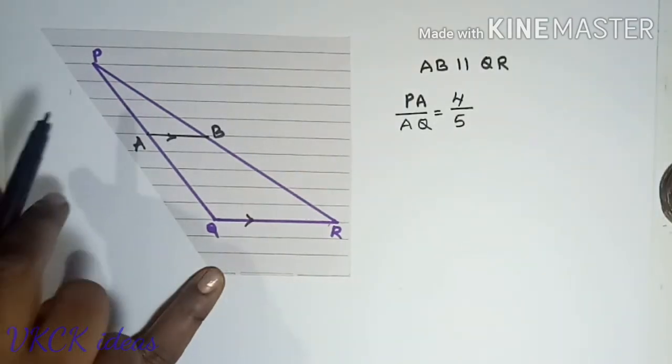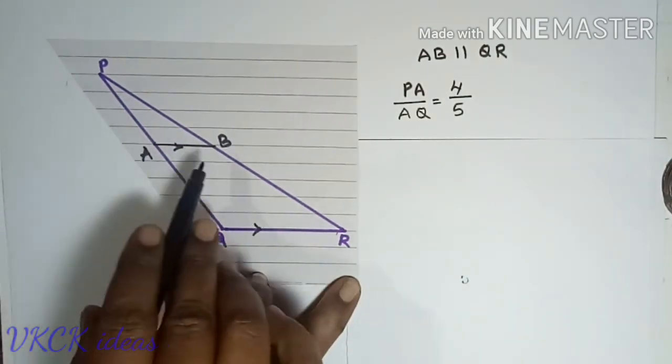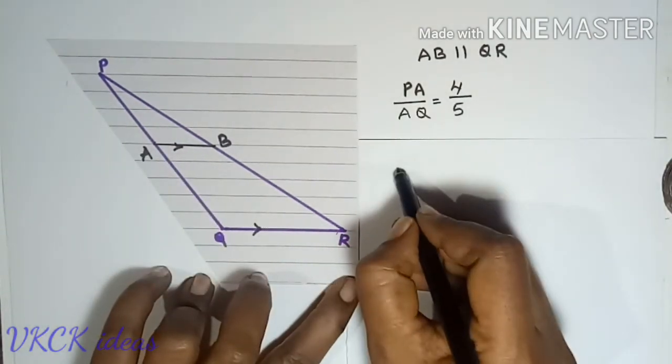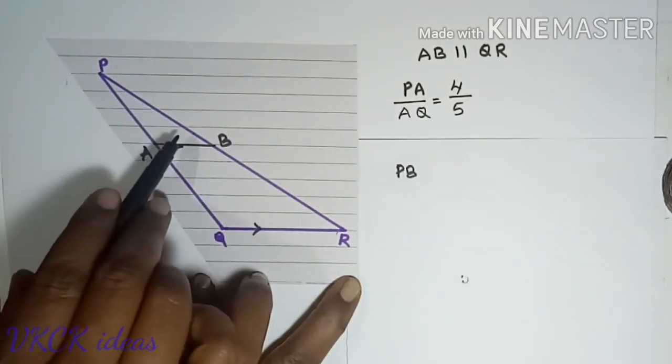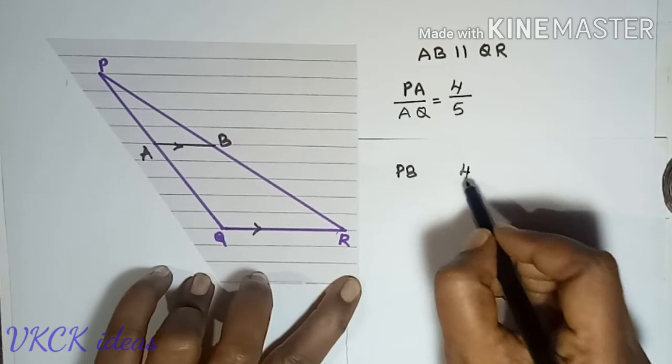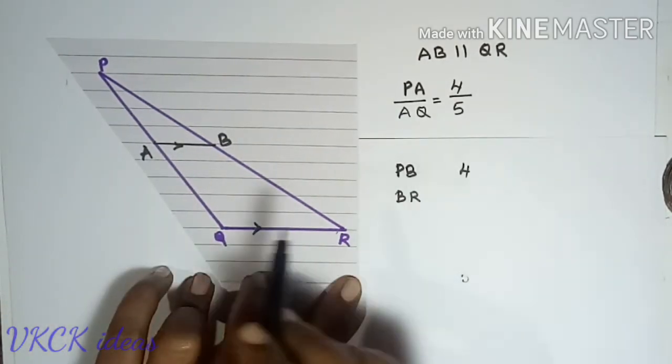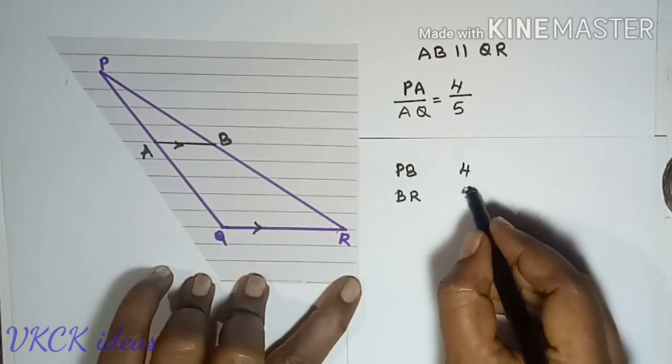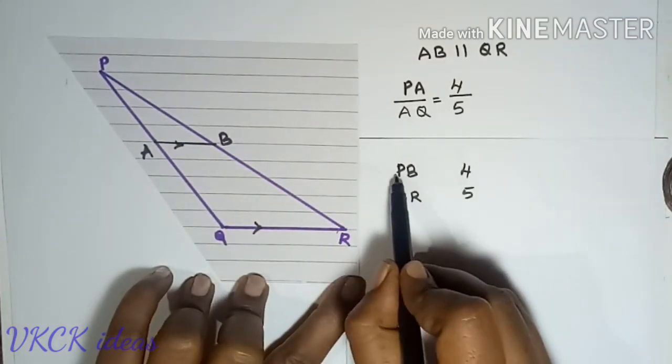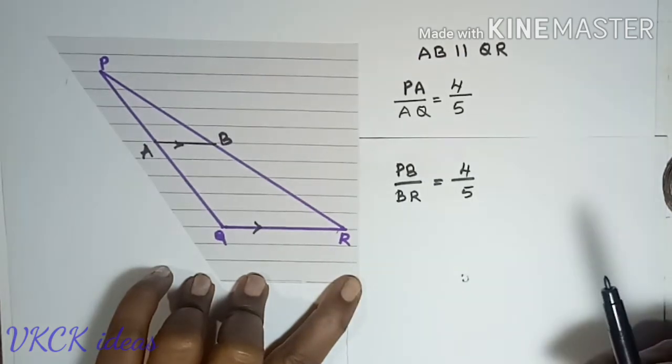Similarly we will observe the other side PR. PB is divided into 1, 2, 3, and 4 equal parts. Now BR is divided into 1, 2, 3, 4, and 5 equal parts. Now if I write the ratio PB by BR, it is 4 by 5 again.